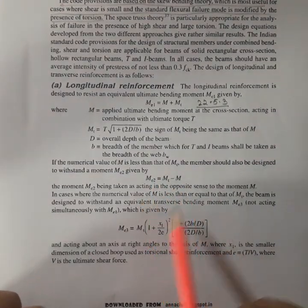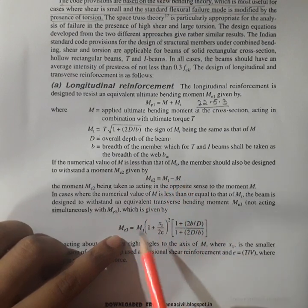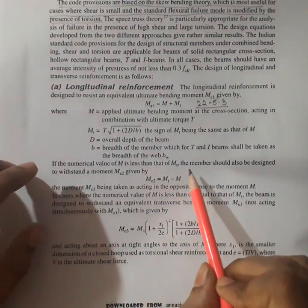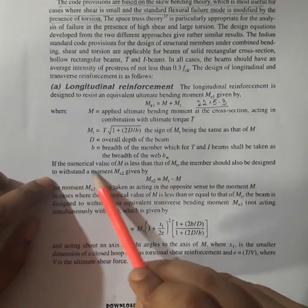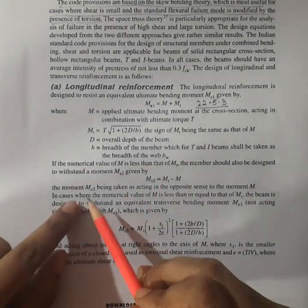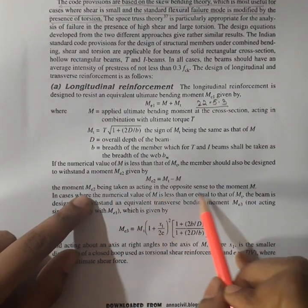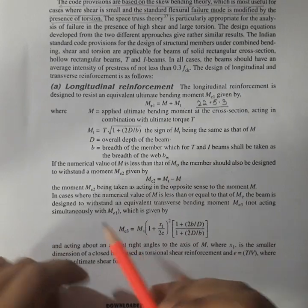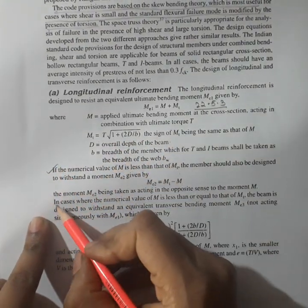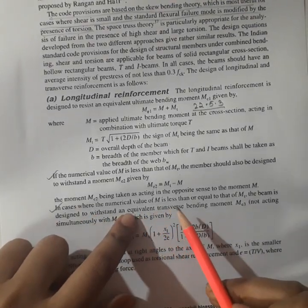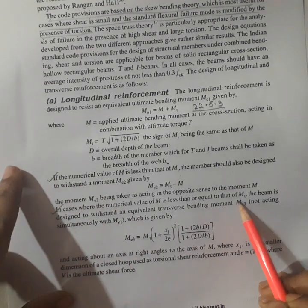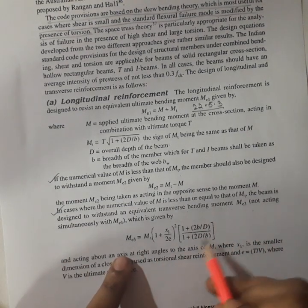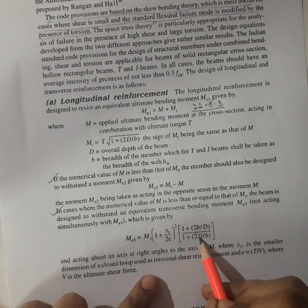With this accumulation of this moment we are getting the equivalent ultimate bending moment. These are the two corresponding equations. If the numerical value of M is less than that of MT, the member should also be designed to withstand a moment ME2, being taken as acting in the opposite sense to the moment. This moment should be adopted in this condition. And if the numerical value of M is less than or equal to the MT, the beam is designed to withstand an equivalent transverse bending moment ME3, then this equation should be applied as follows.